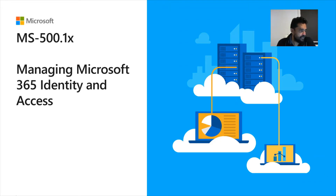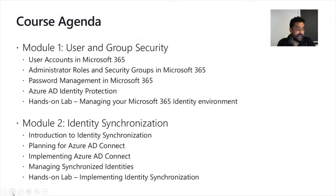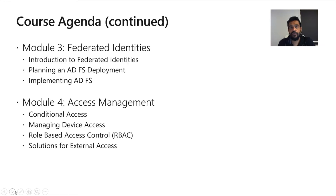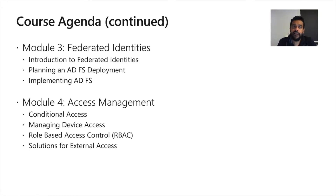During the first day we will be talking about managing Microsoft 365 identity and access. Under that we will be looking at user and group security. The second module is identity synchronization — I have already released a video on that. The third one is federated identities, especially when you implement Microsoft 365 in a hybrid environment connecting on-premises and cloud. The fourth one is access management, especially conditional access, and I have released a video on that as well.